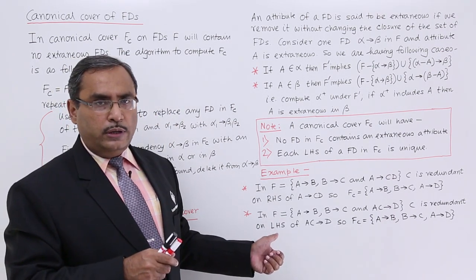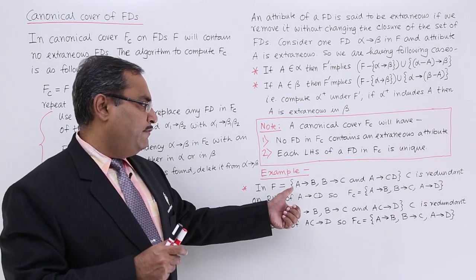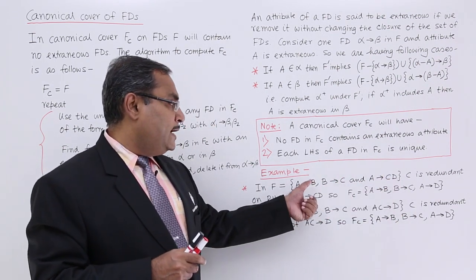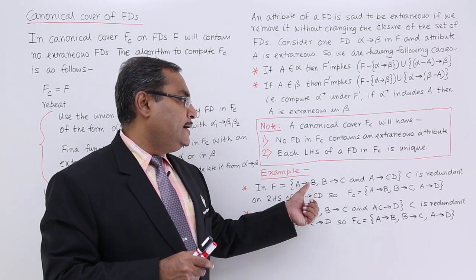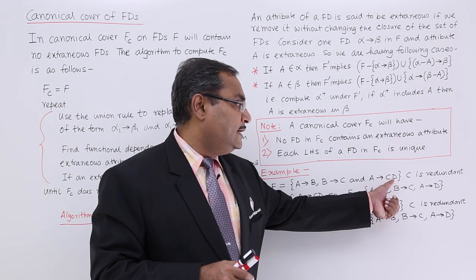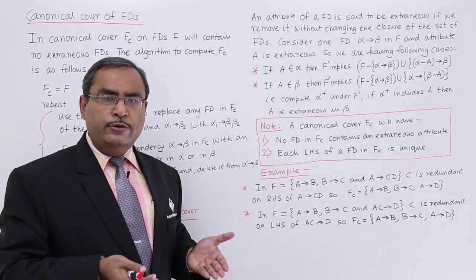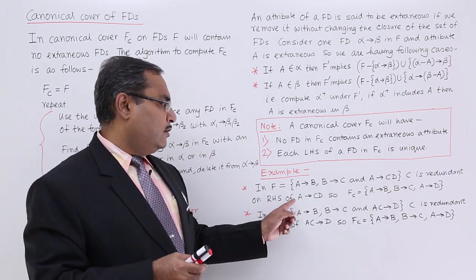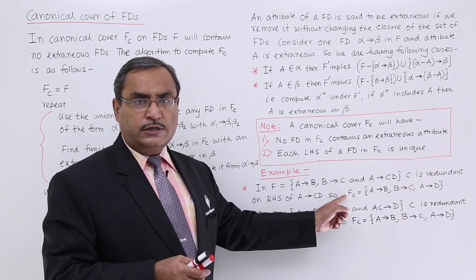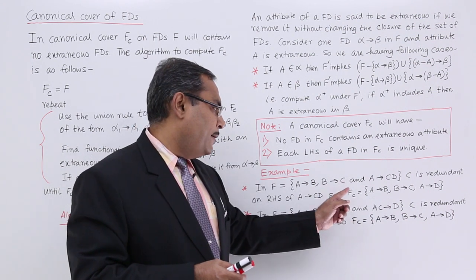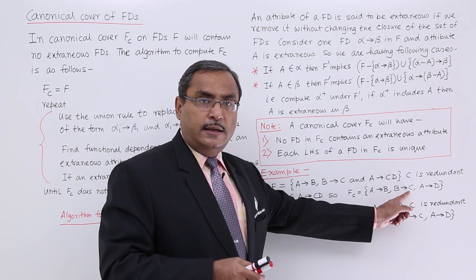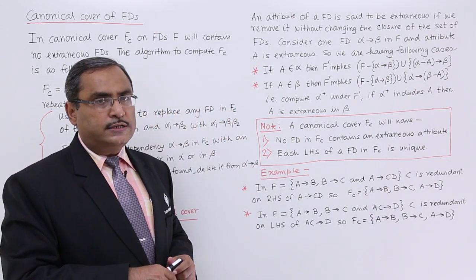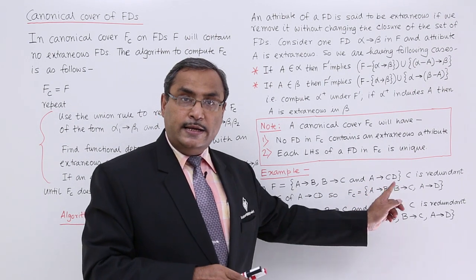Example 1: suppose F = {a → b, b → c, a → cd}. From a → b and b → c, by transitivity we can derive a → c. So in a → cd, c is redundant on the right-hand side because we already know a → c via transitivity. Therefore the canonical cover fc = {a → b, b → c, a → d} — c has been eliminated as an extraneous attribute on the right-hand side of a → cd.